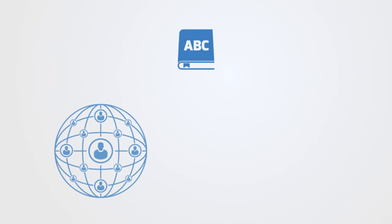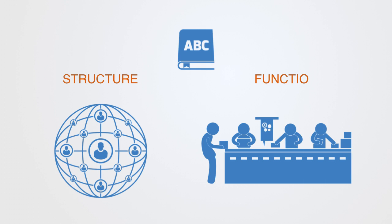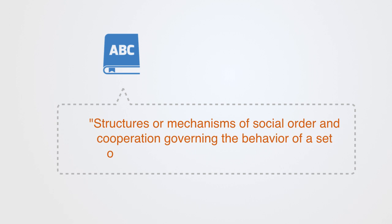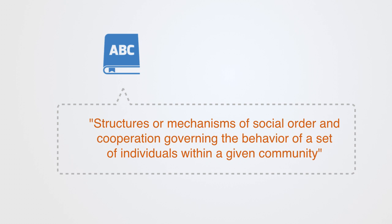There are really two different interpretations to this concept of an institution. It may be understood with reference to structure or function. For example, in the definition from the Stanford Encyclopedia of Philosophy, they define institutions as structures or mechanisms of social order and cooperation, governing the behavior of a set of individuals within a given community. We can see in this definition the idea that institutions primarily exist to maintain order and structure.